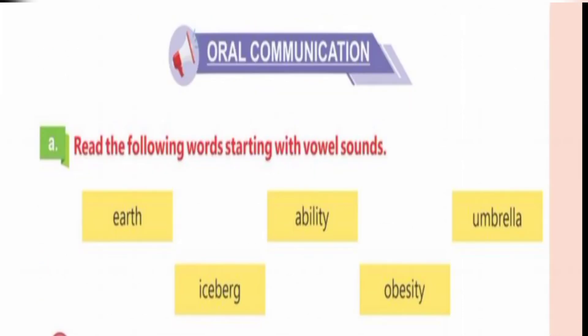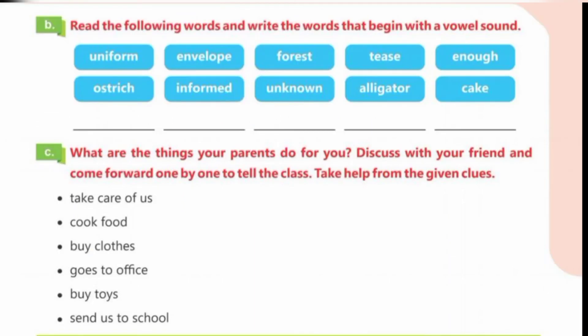The next question: Read the following words starting with vowel sounds — earth, ability, umbrella, iceberg, obesity. Part B: Read the following words and write the words that begin with vowel sounds — uniform, envelope, forest, tease,elf, ostrich, informed, unknown, alligator, cake.